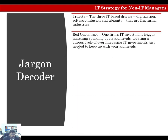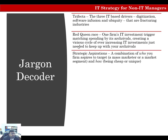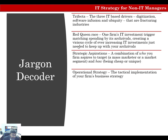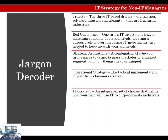I will keep using the word Red Queen race, which is essentially the cascading investments in information technology triggered by one firm starting to spend on IT investments. To match it, rivals keep putting in more money, creating a vicious cycle of ever-increasing IT investments. Strategic aspirations is a combination of who your firm aspires to target and how. Operational strategy is a tactical implementation of your firm's business strategy. IT strategy is a set of choices that define how your firm will use IT to outperform its rivals. Your IT strategy must synchronize with your strategic aspirations — and that's what we're going to talk about in this chapter.